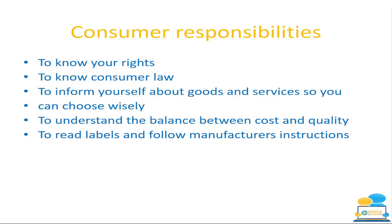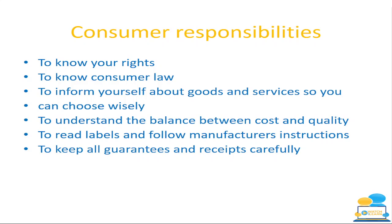You should be able to read labels and follow the manufacturer's instructions — a lot of people cut them off or don't read instructions at all. You should be reading them to be an informed consumer, as it is your consumer responsibility. Keep all your guarantees and receipts carefully — take a picture of them and have a digital version, because the ink on receipts fades after a couple of months. Store hard copies in a box or folder too. For example, if you bought a laptop with a 12-month guarantee and at 11 months something happened to it, you'd need that receipt — otherwise you can't claim anything.